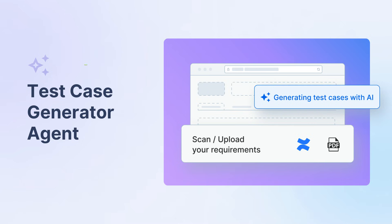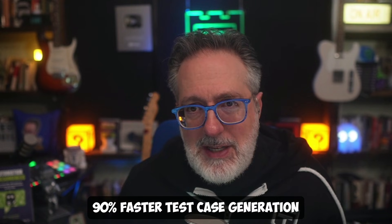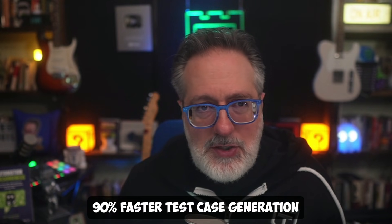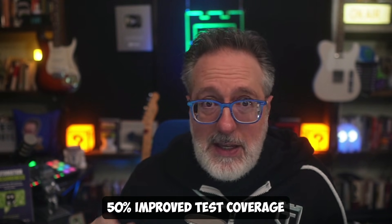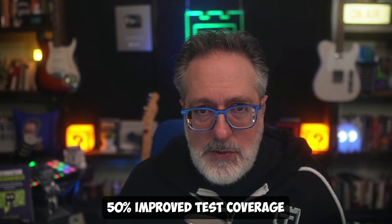The first challenge testers encounter is creating comprehensive test cases from product requirement documents. BrowserStack's AI-powered test case generator agent analyzes the product requirements and instantly generates context-rich test cases. This agent can help achieve 90% faster test case generation and 50% improved test coverage.